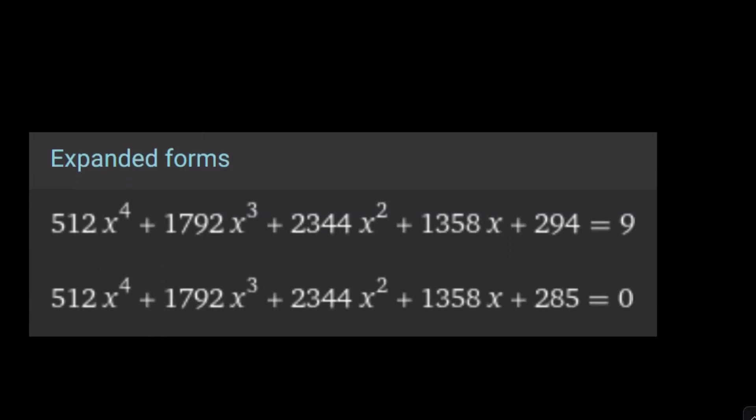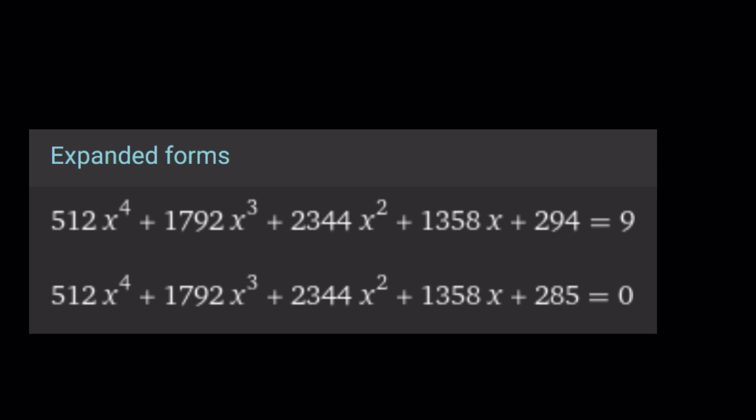So when you go ahead and distribute the whole thing and simplify you get one of these expressions. Of course if you put everything on the same side you're going to get the bottom equation which is 512x to the 4th power plus 1792x cubed plus so on and so on. You get the idea. It is a quartic but not only that it has big gigantic coefficients which makes it harder to solve especially with the rational root theorem because we're supposed to be looking at the factors of this divided by factors of this. There's a lot of possibilities but not only that the numbers are big and clumsy. So there must be an alternative method, right?